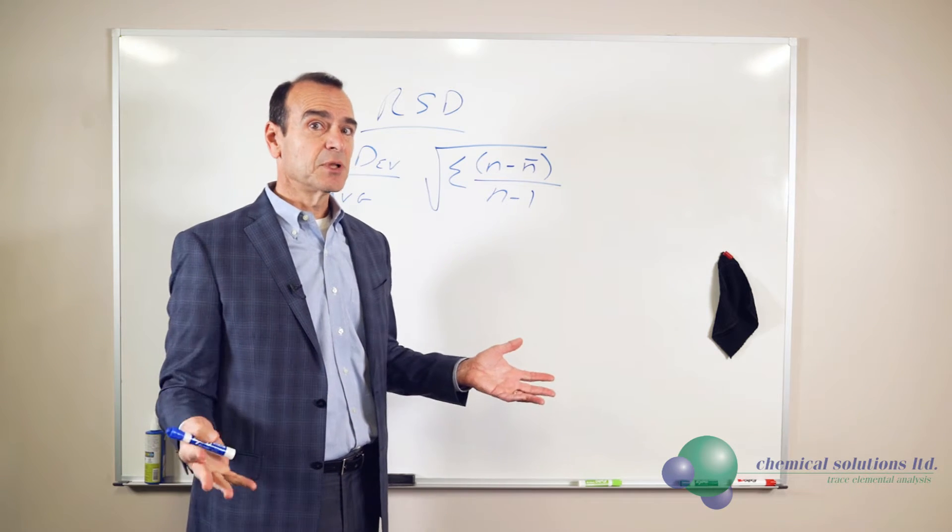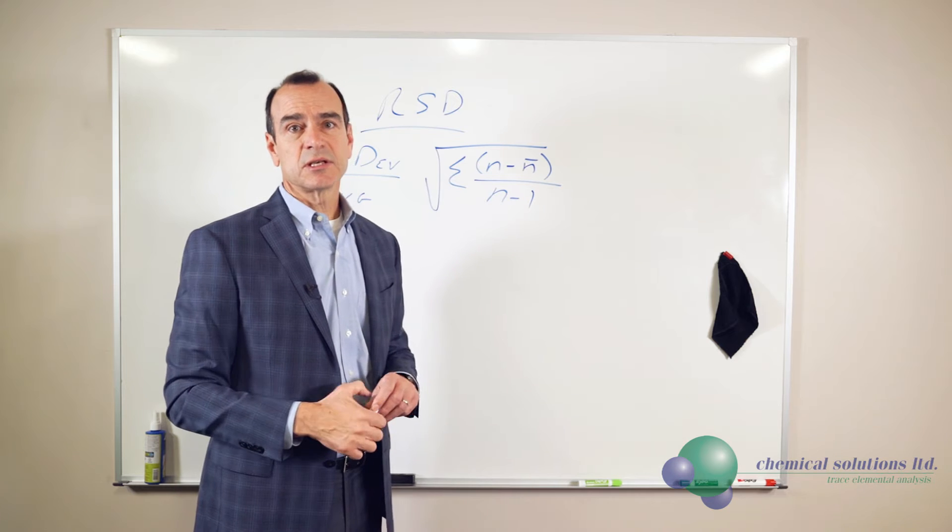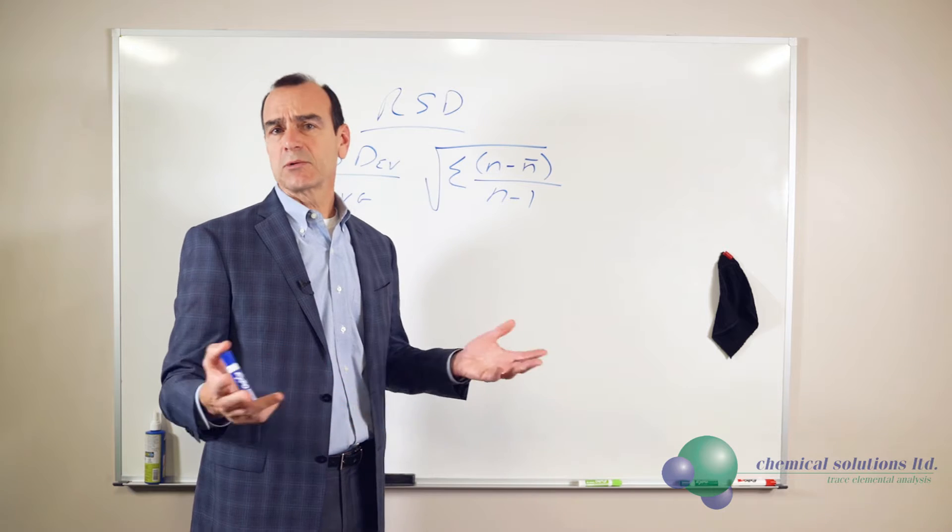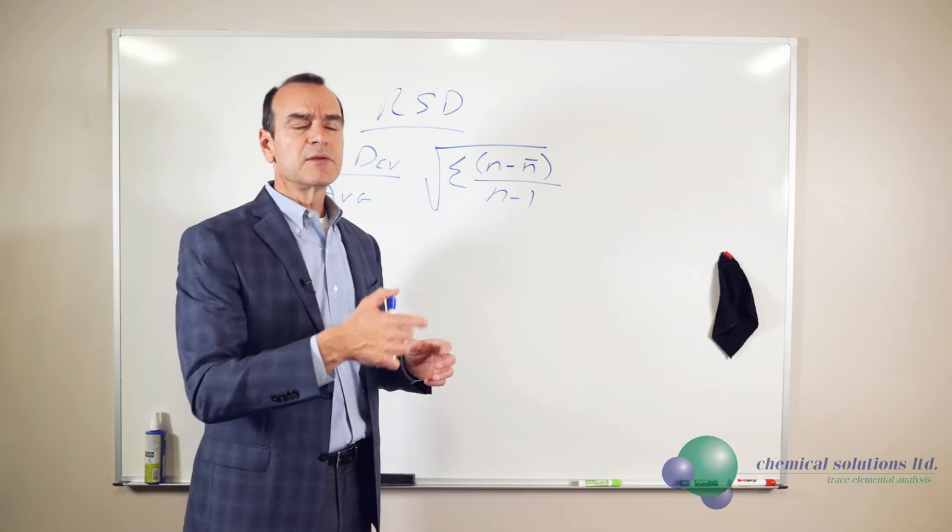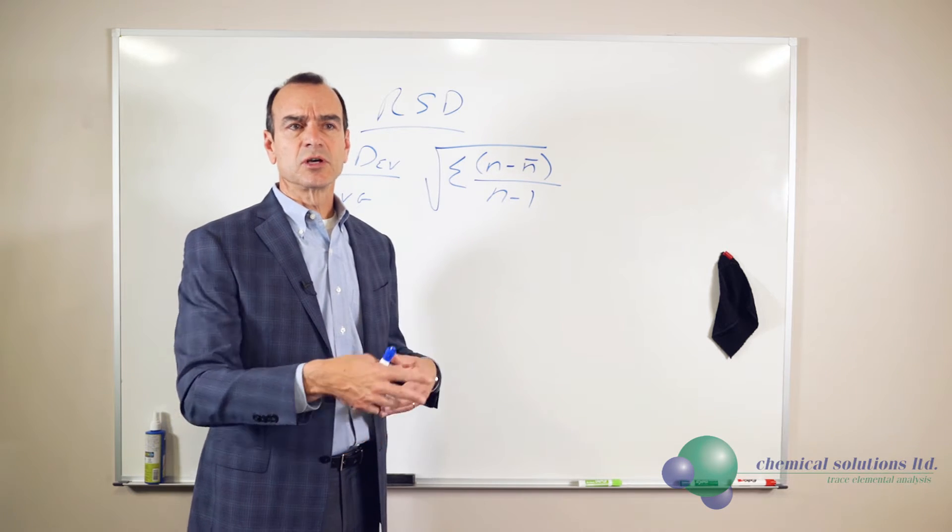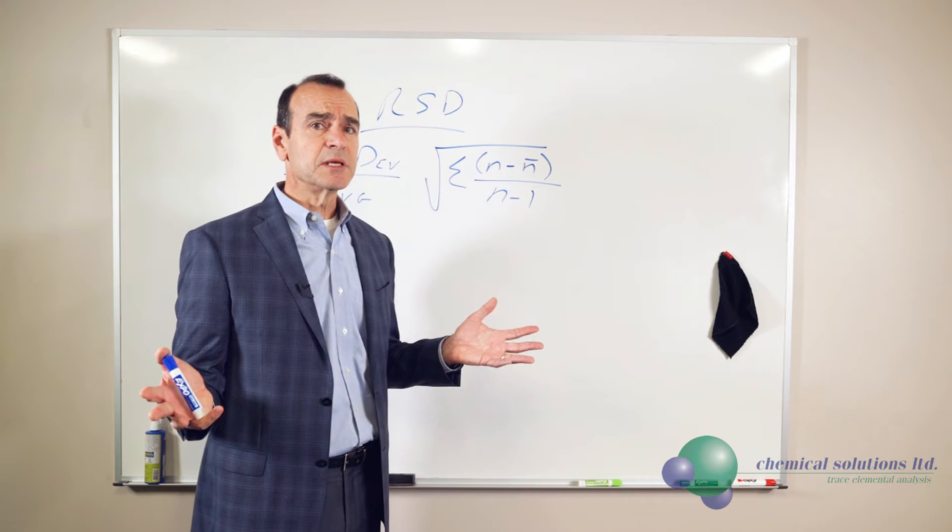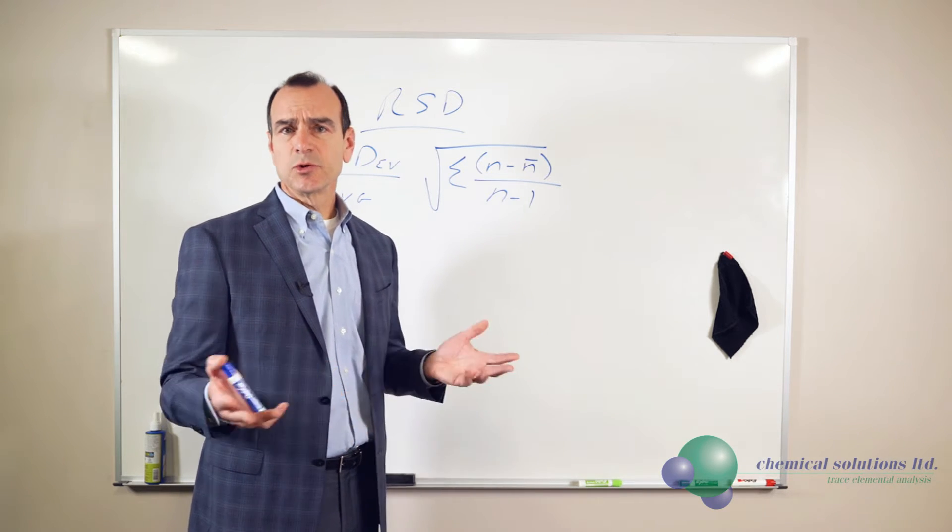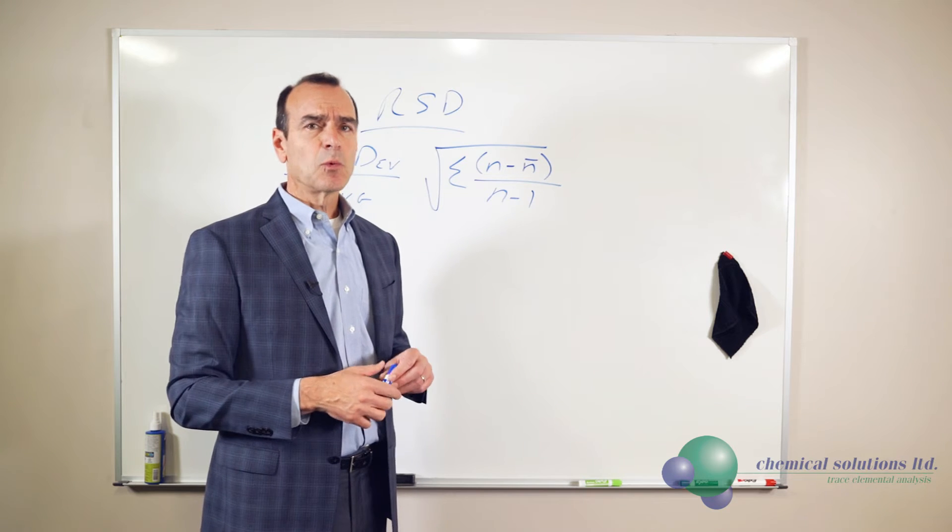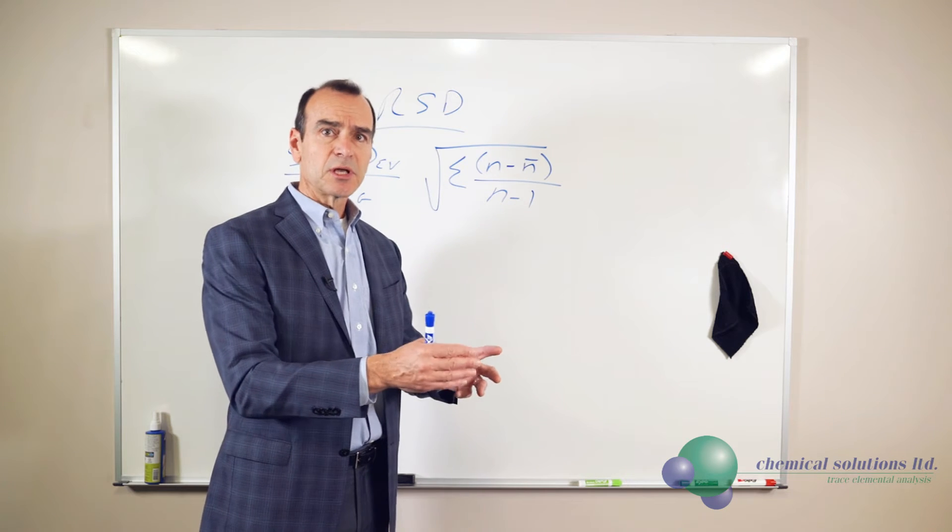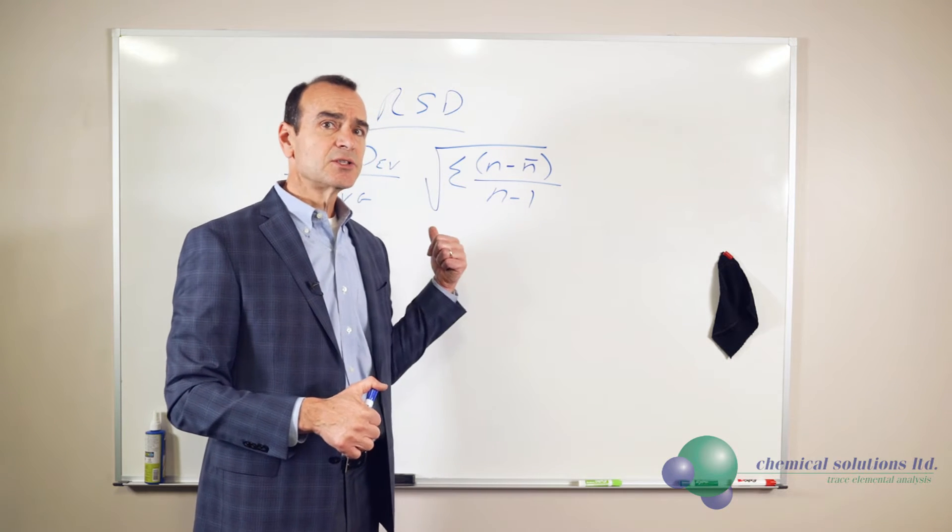Now, where is RSD applied? Well, it's applied in many cases in our lab. But one that typically comes up is with out-of-spec results. Let's say we give you a result on something you've tested for four elements. One of those elements comes out to be out-of-spec, and you ask us to do a retest. What we use as a gauge of whether the process is in control or whether there's really something you should be looking at in your sample is RSD.